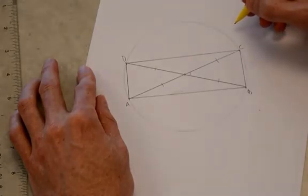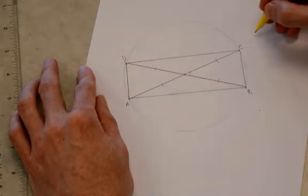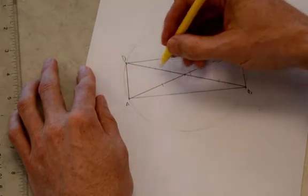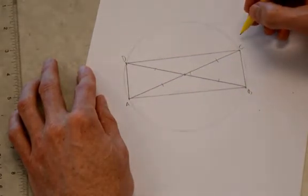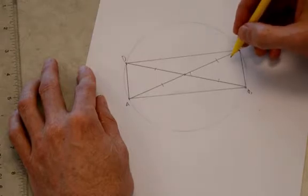Also, these diagonals are congruent. And a rectangle is a parallelogram with congruent diagonals. So just by using the circle and drawing the two diameters, we're able to construct a rectangle.